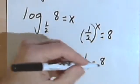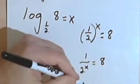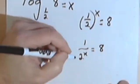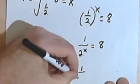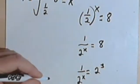Since I'm dealing with a 2, I want to convert this 8 into something with a 2. And that's going to be 2 to the 3rd. So 1 over 2 to the x equals 2 to the 3rd.